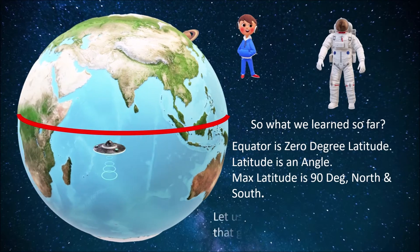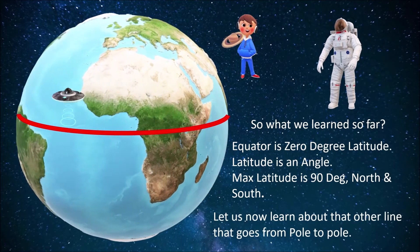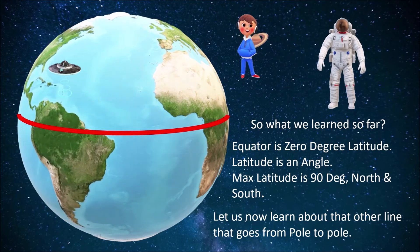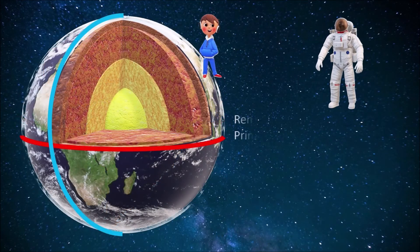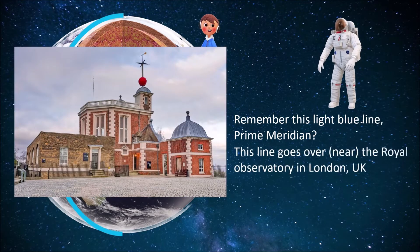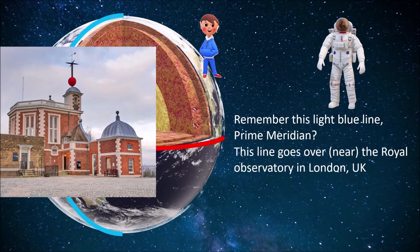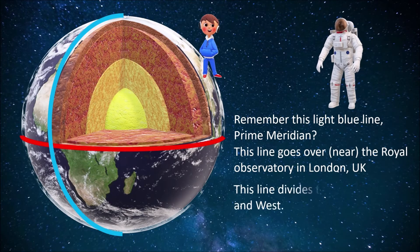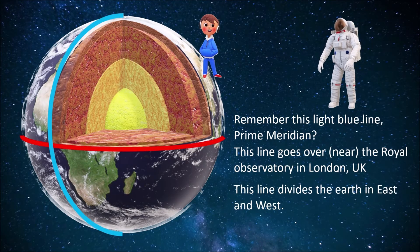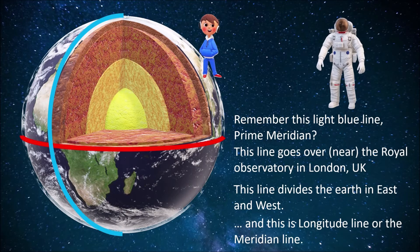Let us now learn about the other lines that goes from pole to pole. Remember this light blue line, the prime meridian? This line goes over or near the royal observatory in London, UK. This line divides the earth in east and west and this is longitude line or the meridian line.